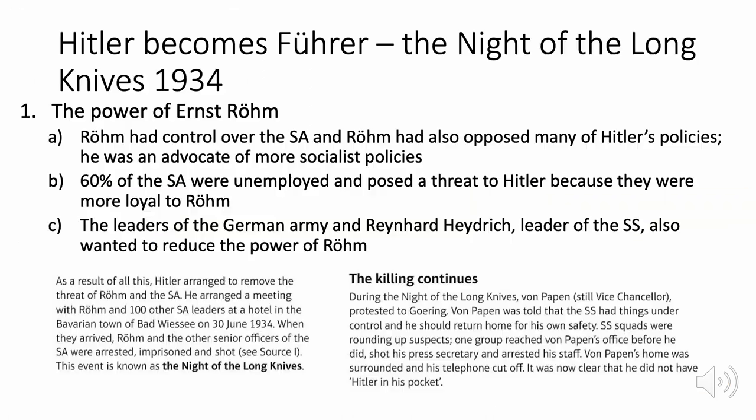The biggest step towards becoming Führer was the Night of the Long Knives. Hitler was concerned about Ernst Röhm, who controlled the stormtroopers — 60% of whom were unemployed and discontented — and who was critical of Hitler's right-wing fascist policies, being more of a socialist himself. The leaders of the German army and Reinhard Heydrich, leader of the SS, also wanted to reduce Röhm's power, so they teamed up with Hitler.